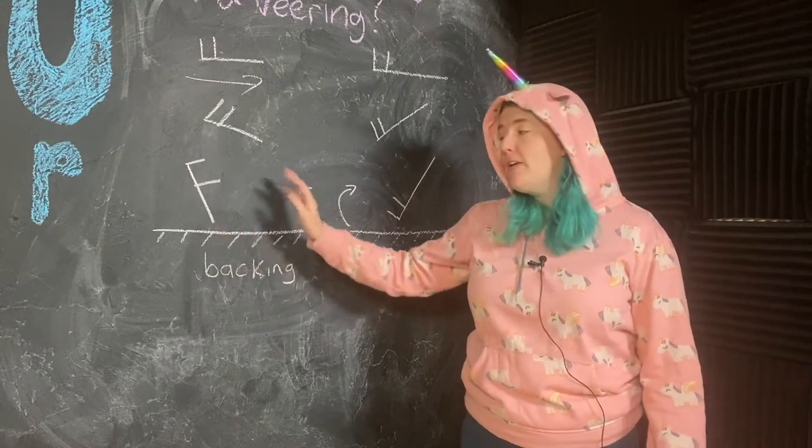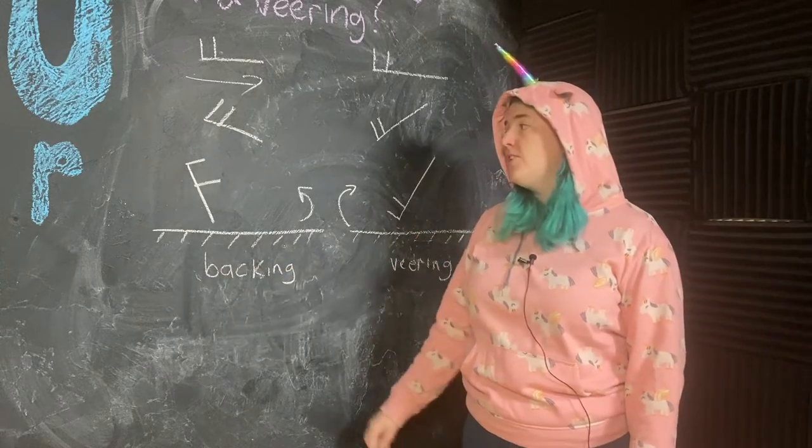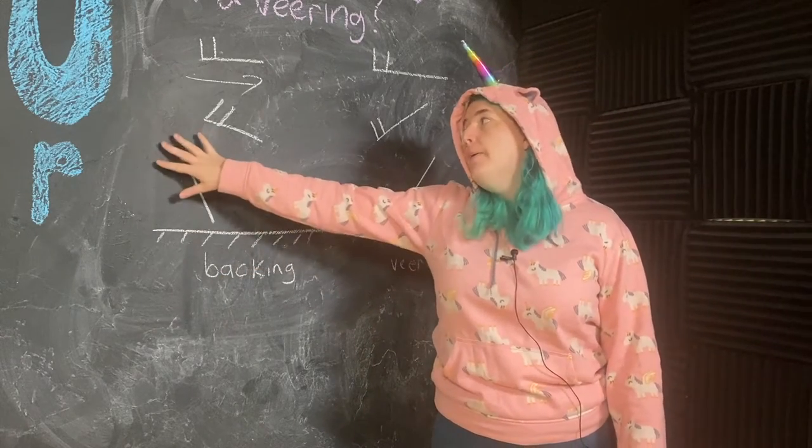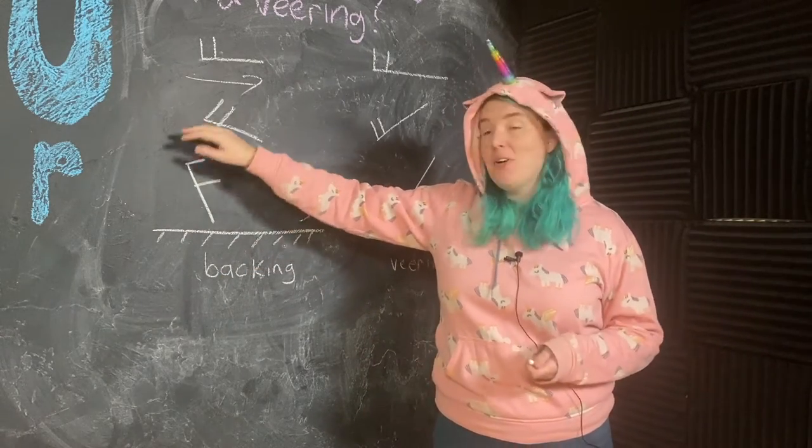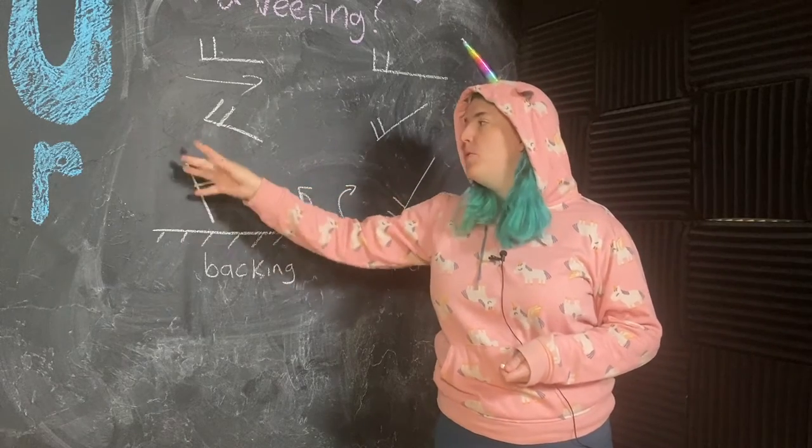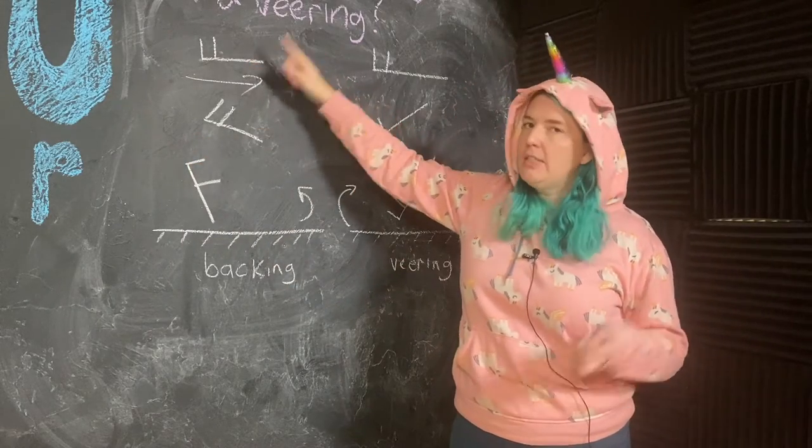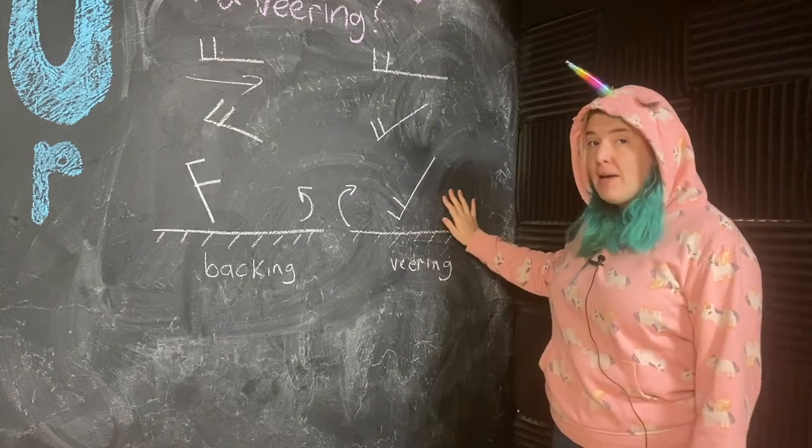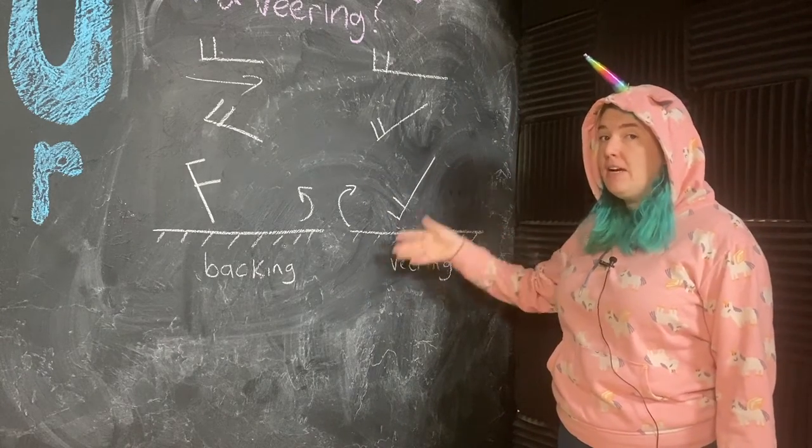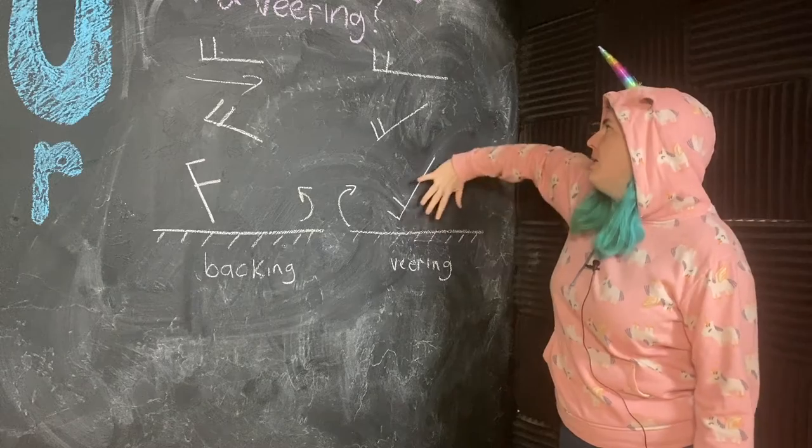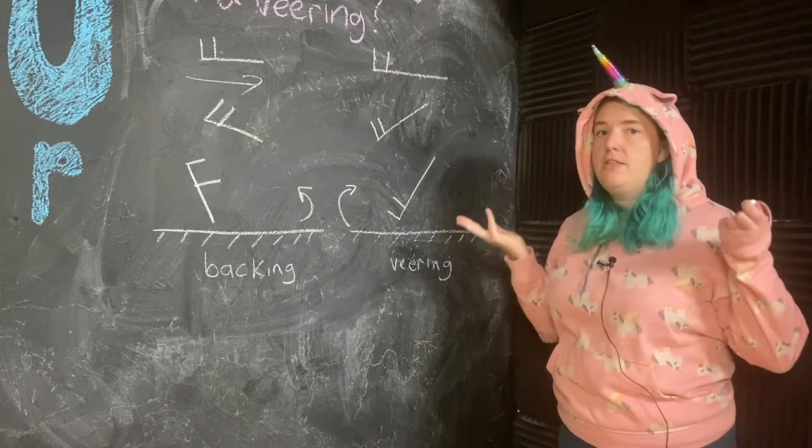Close to the surface in my backing pattern, winds are coming from the northwest, definitely more north than west. And then we're becoming more westerly with height. For my veering pattern, winds are coming from the southwest and are becoming more westerly with height.